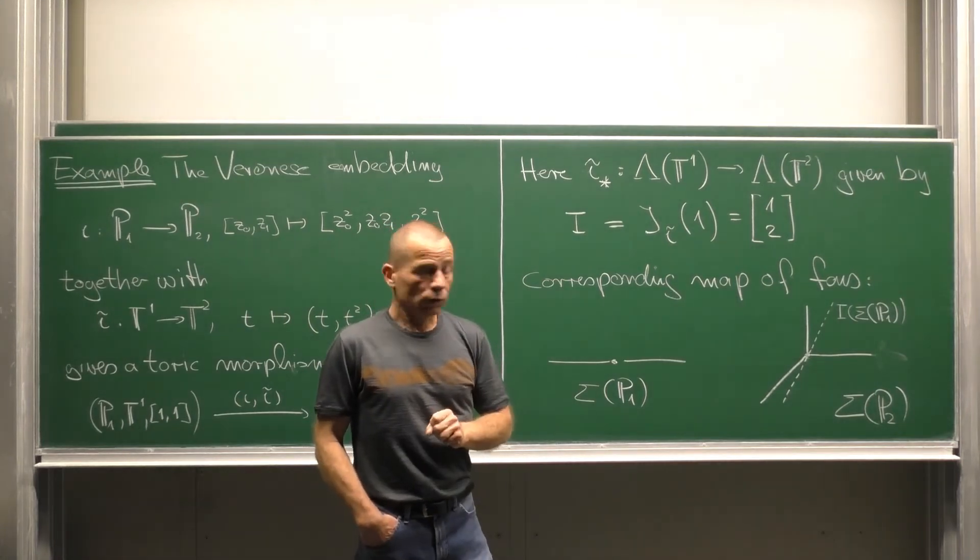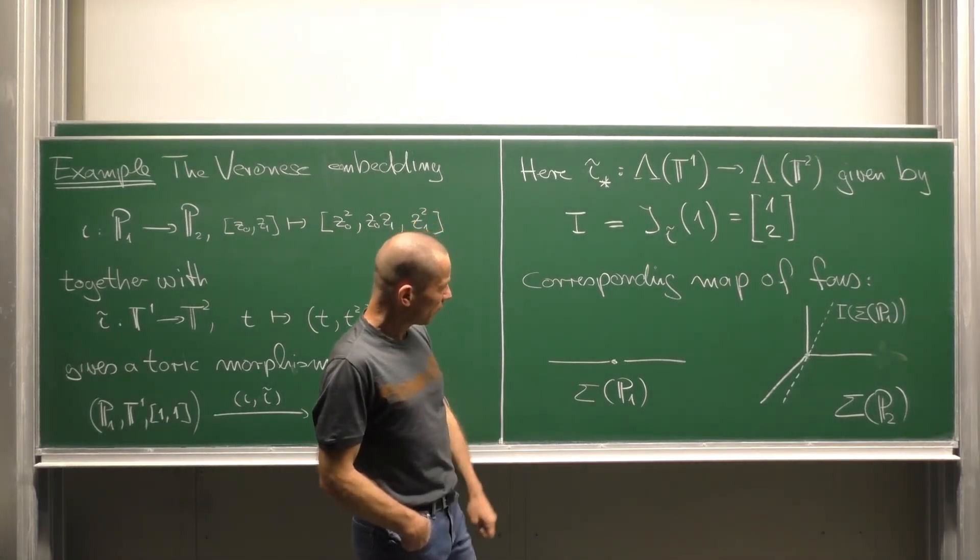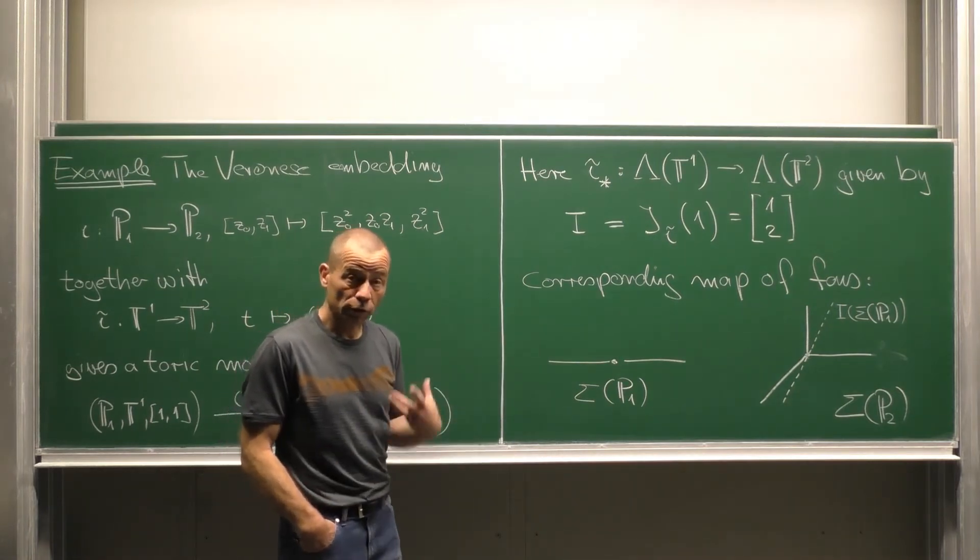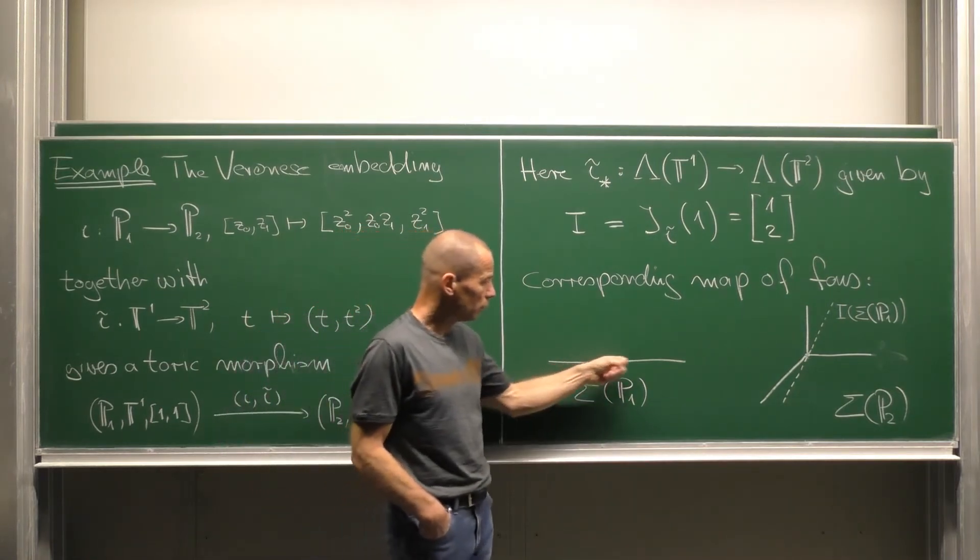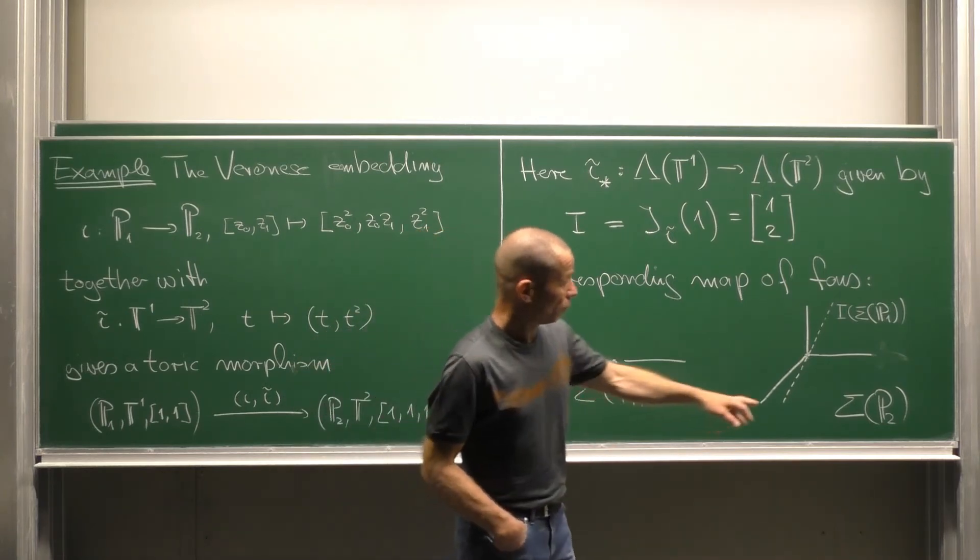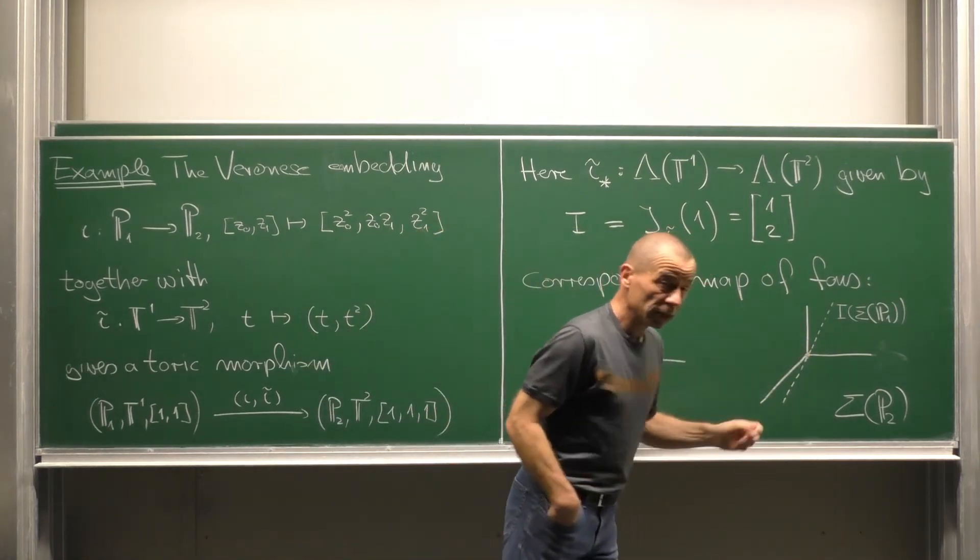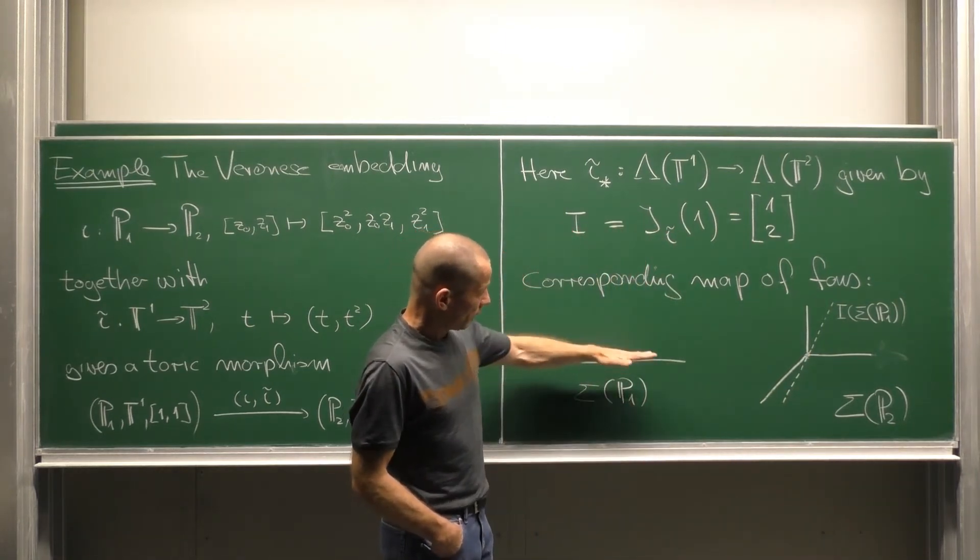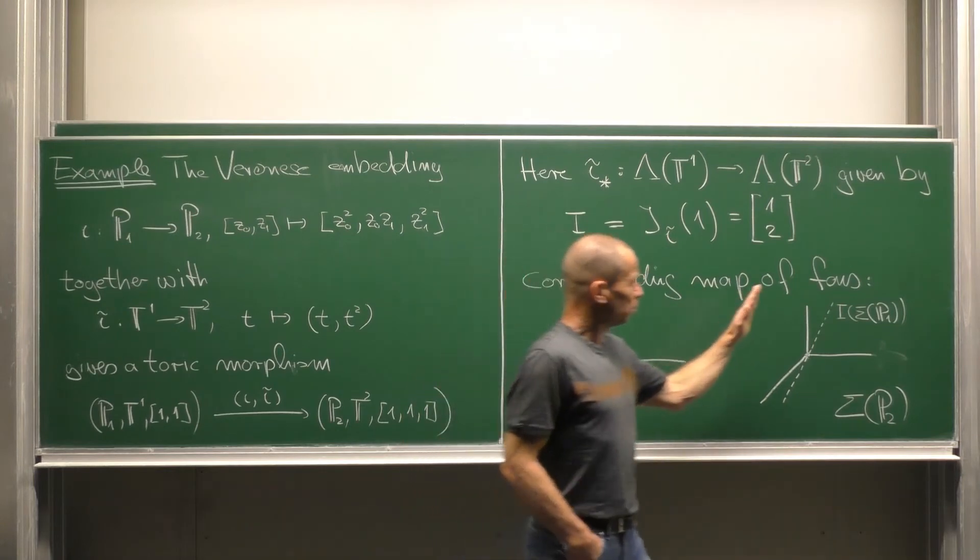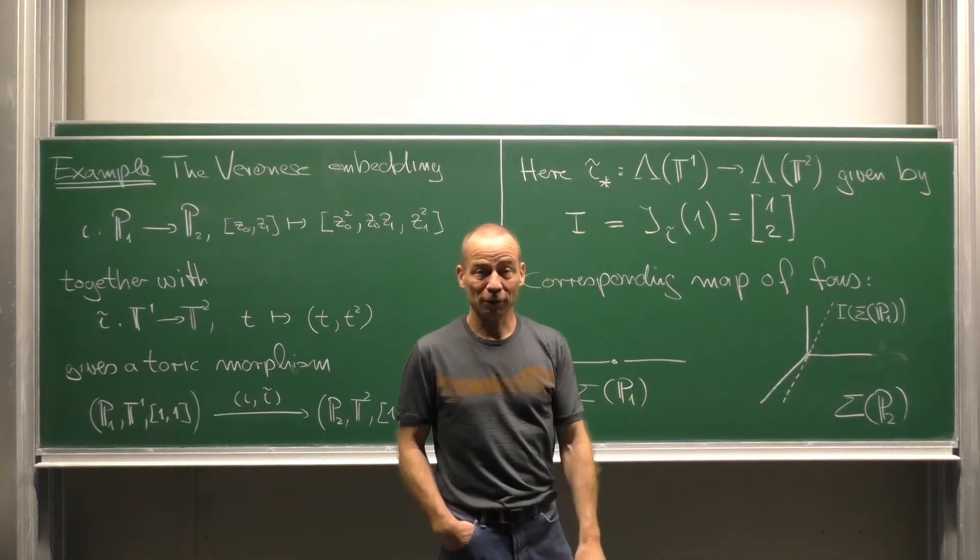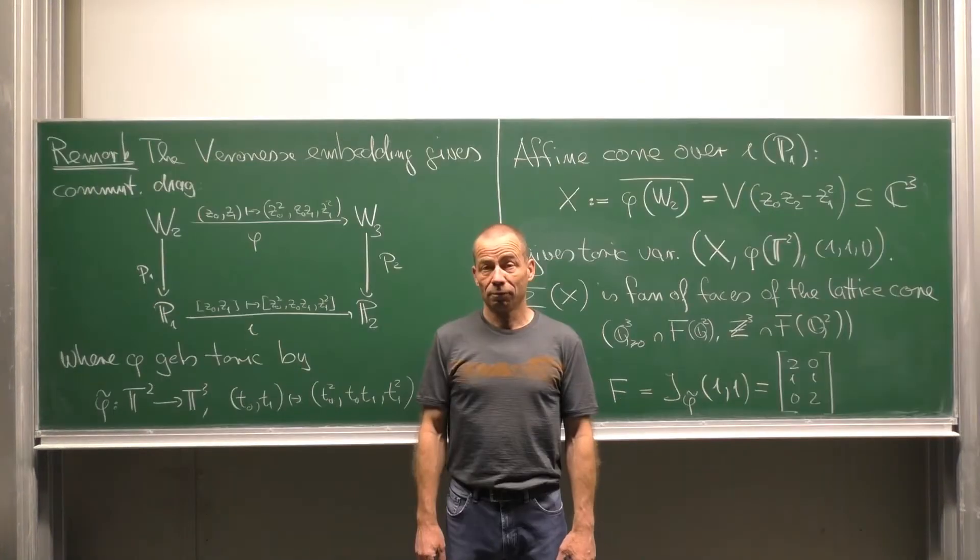How does the corresponding map of fans look like? Here we have the fan of the projective line with two maximal cones. Here we have the fan of the projective plane with the three maximal cones. And our I takes this fan and puts it like that into the fan of the projective plane.